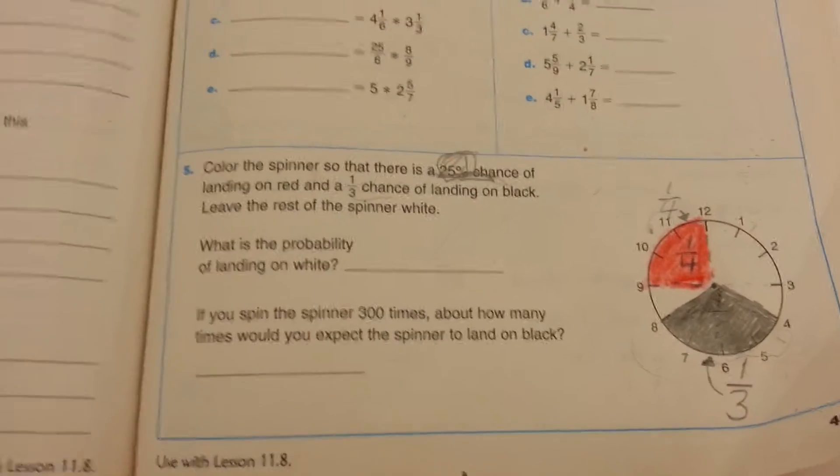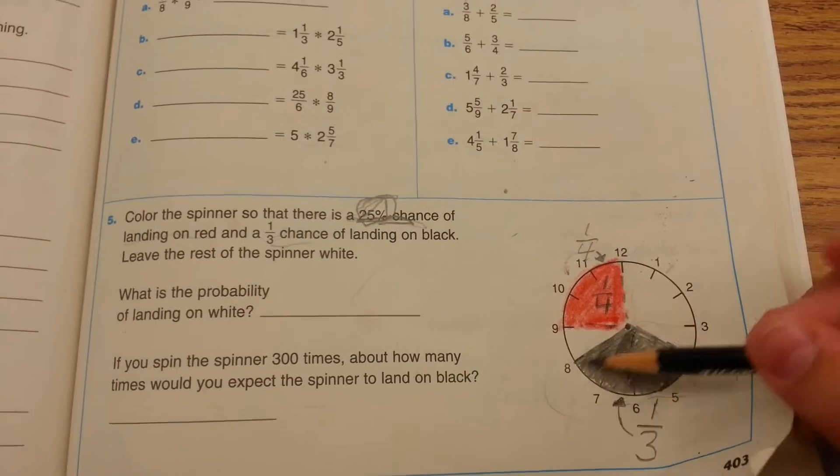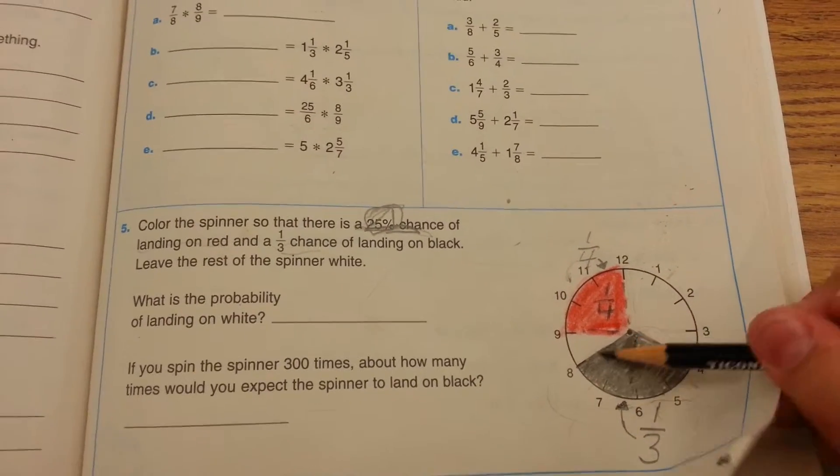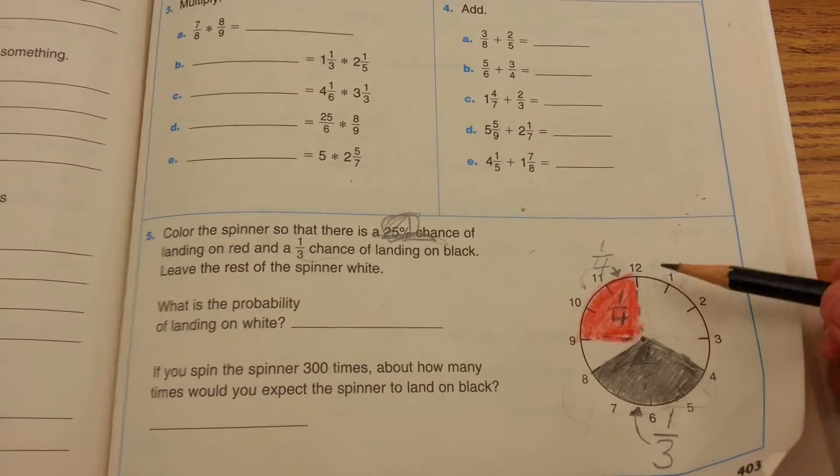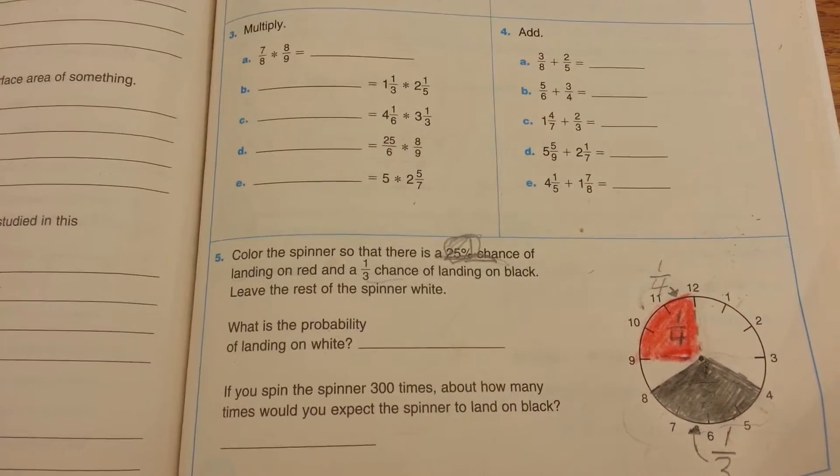How did you know what one-third was? Because that was really good. I knew that I just had to draw it like a little peace sign thing. Yeah. Good job. Okay, so what's the probability... so then you have to leave the rest of it white?